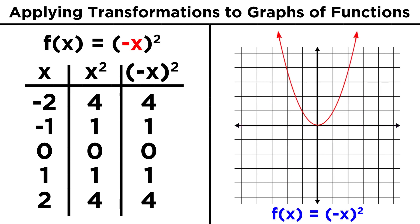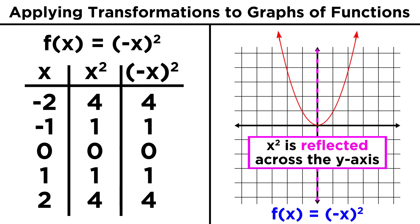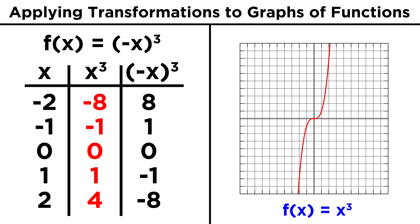If instead it was negative x quantity squared, this would produce a reflection across the y axis, which in this case will make no difference. But in other instances, like with x cubed, it will change the graph.